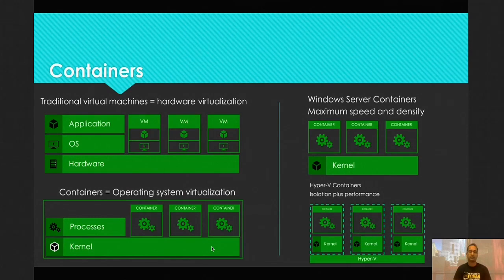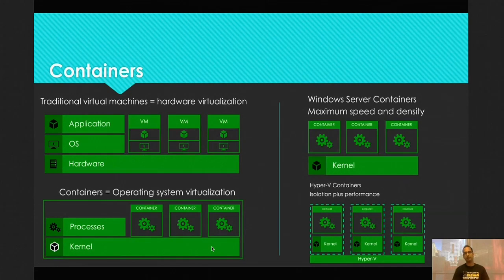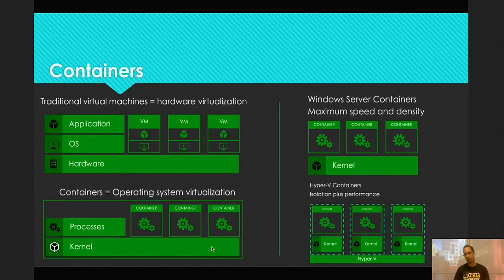Hyper-V containers provide isolation and still give better performance over a traditional VM, but there is some overhead because there is an independent kernel running in each container. Working with customers recently, the question comes up of when to use which one. Typically Hyper-V containers make sense for multi-tenant applications — if you're a hosting provider running multiple tenants' solutions, you want some degree of isolation so there's no shared kernel. But generally I would say start with the regular Windows container, and if you have a need for isolation, then go toward Hyper-V, which justifies the performance trade-off.